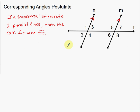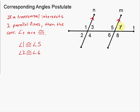I'm going to list out all of the corresponding angles that are congruent. Angle 1 is congruent to angle 5. Angle 2 is congruent to angle 6. Angle 3 is congruent to angle 7. And angle 4 is congruent to angle 8. That is all of the corresponding angles that are going to be congruent with this postulate.